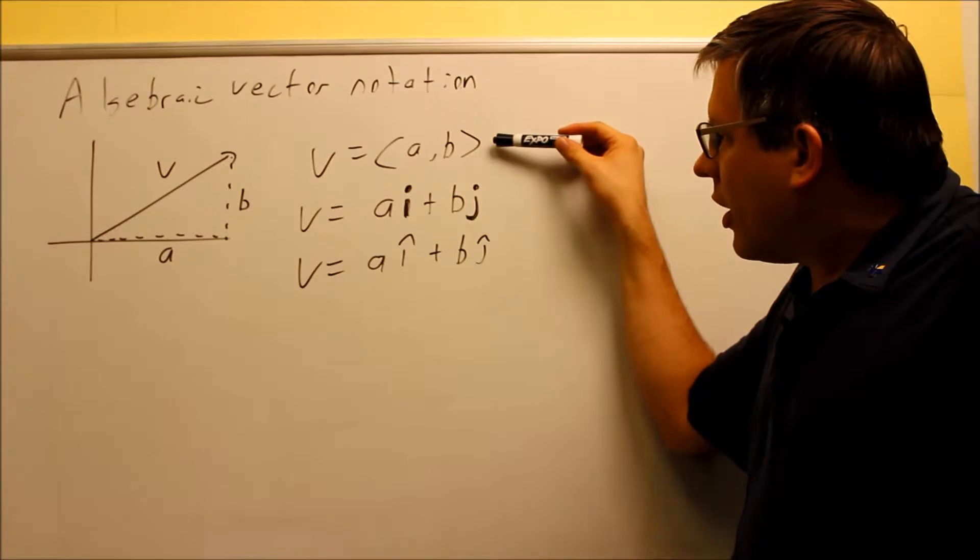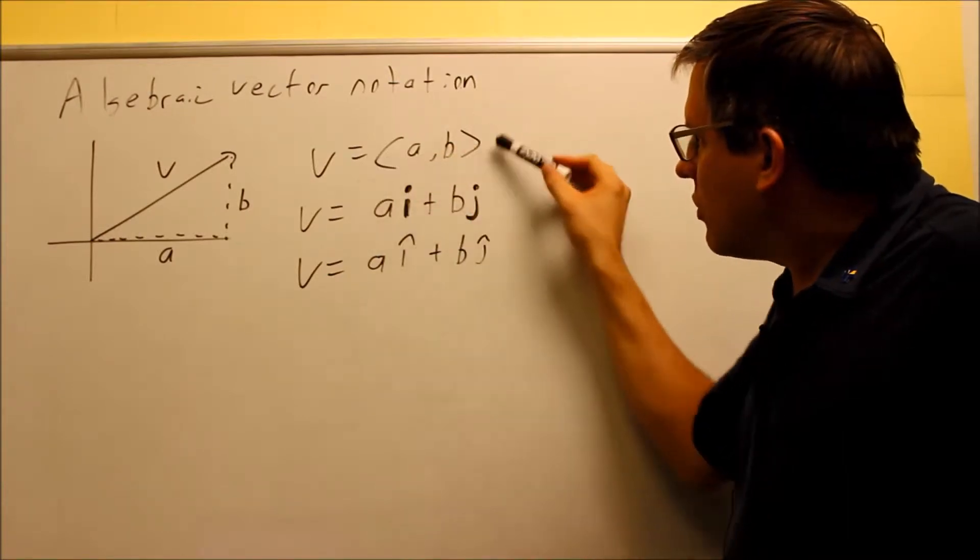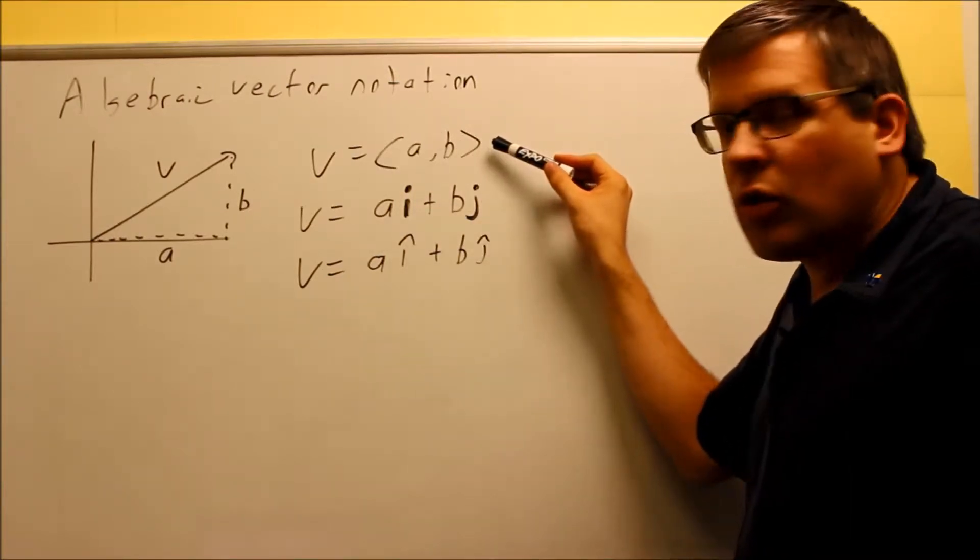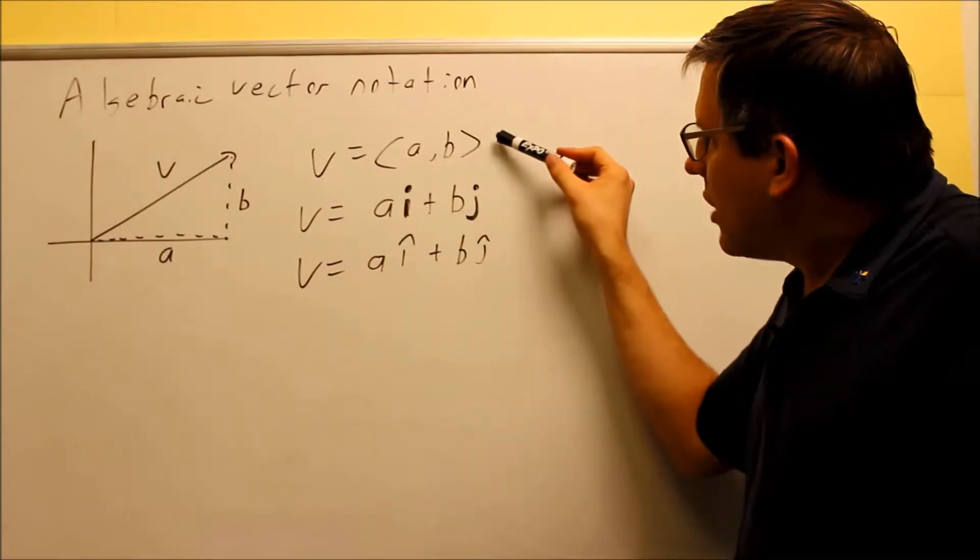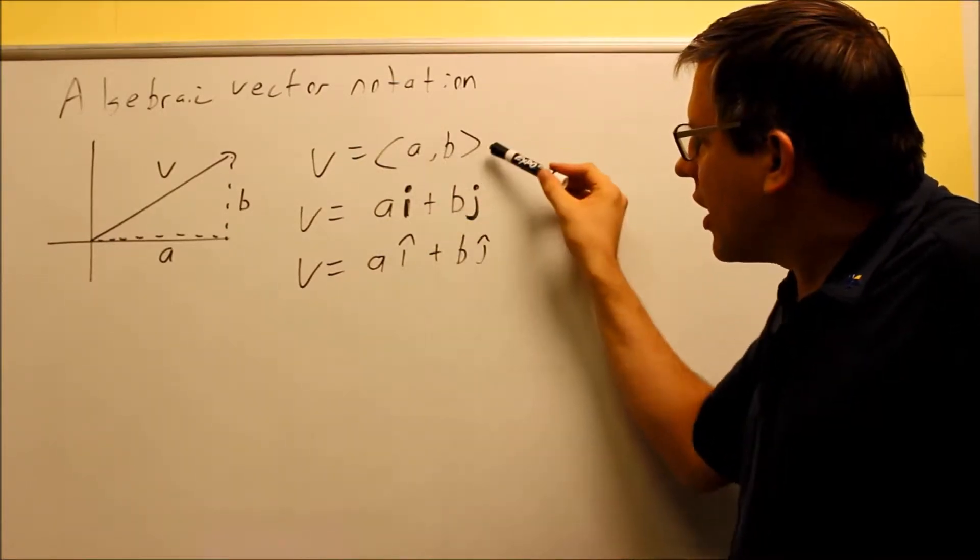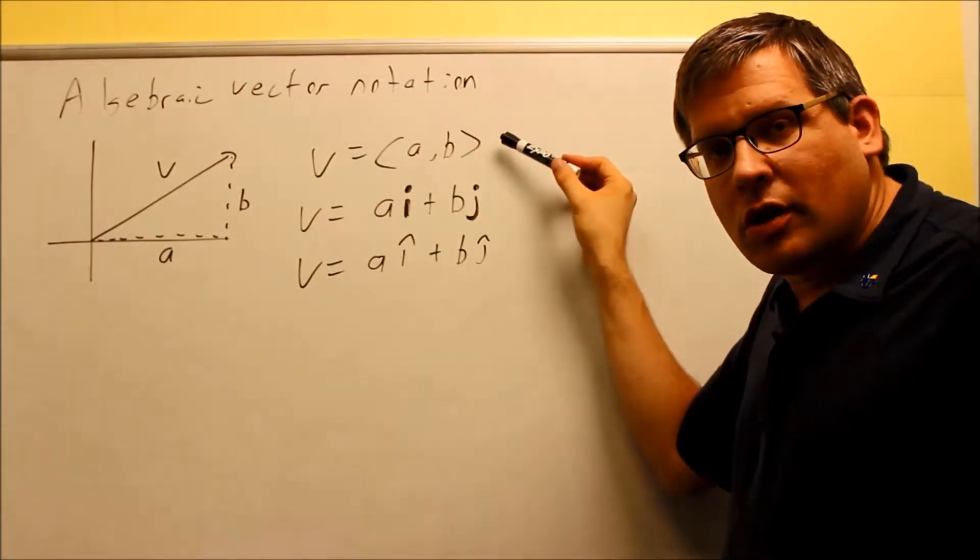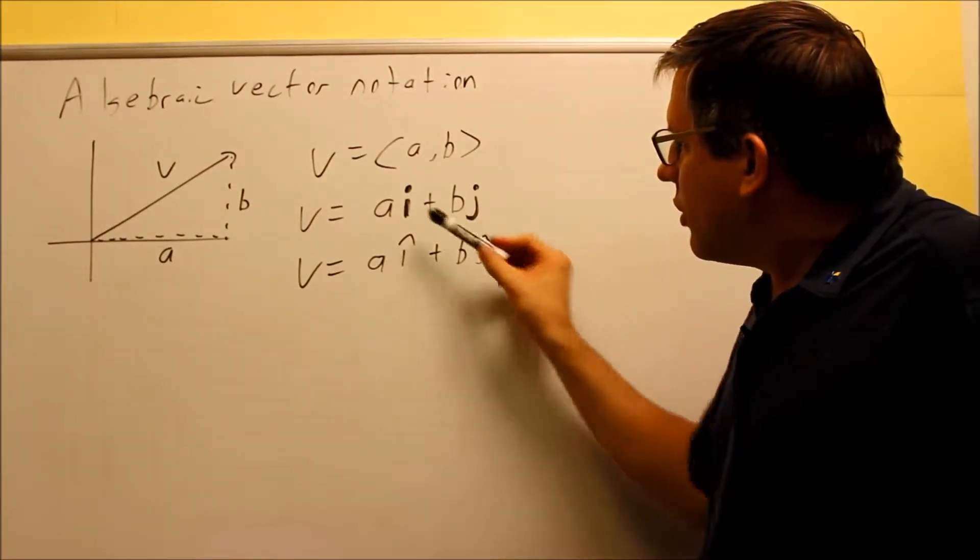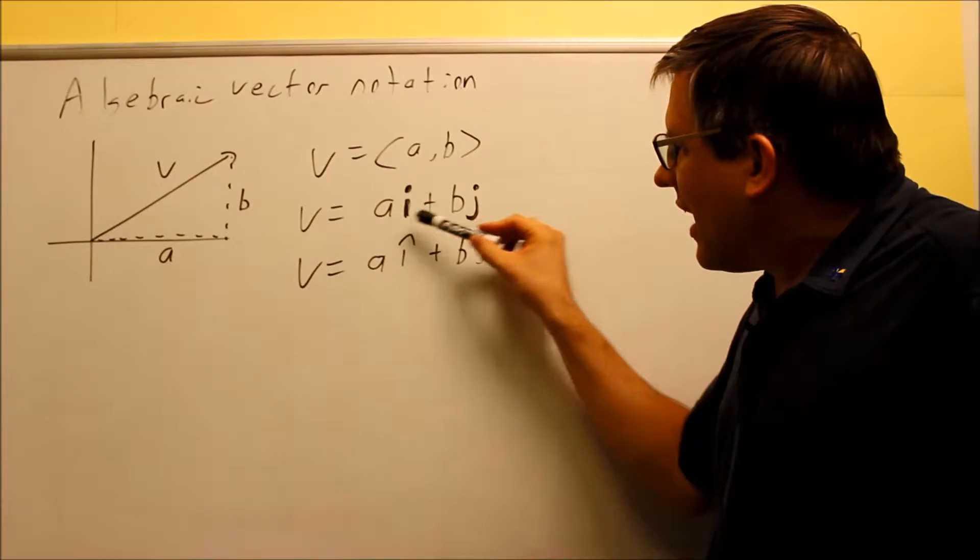So you can either have it looking like this, where you have it in between some inequality notation here. That basically doesn't really mean inequality at all. It actually just means that A and B is inside there, and that's one way of representing a vector. The second way of doing it is again with these bold letters, the I and the J.